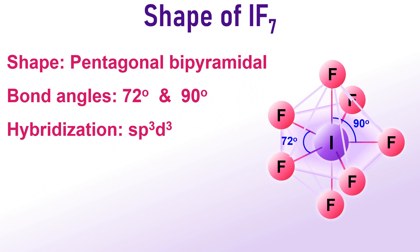Once again, the key points: the shape of iodine heptafluoride is pentagonal bi-pyramidal. The bond angles are 72 degrees and 90 degrees. The hybridization in the central iodine atom is sp3d3.